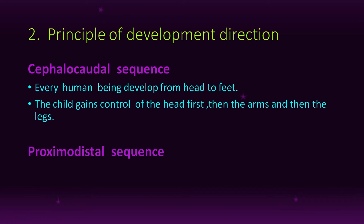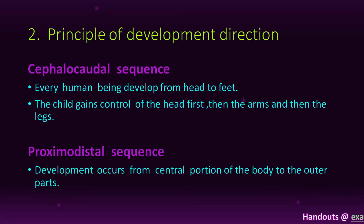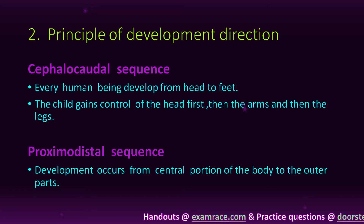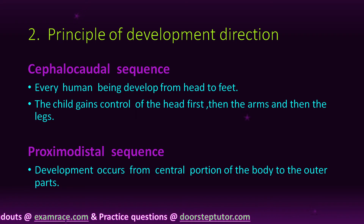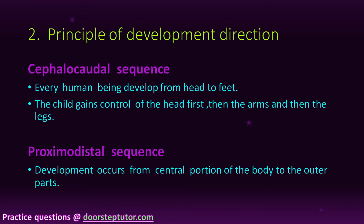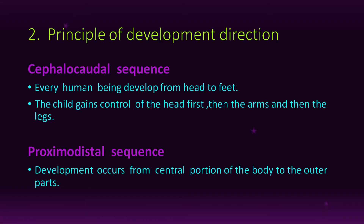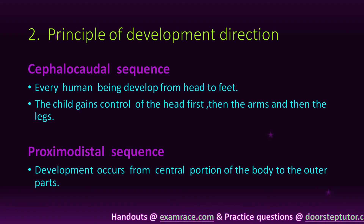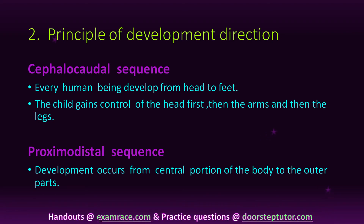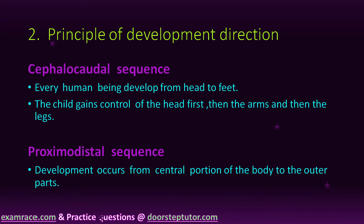The proximodistal sequence means development occurs from the central portion of the body to the outer parts. For example, looking at the hand, the elbow grows first and then the fingers — growth starts from the central portion outward. First the spinal cord develops, then the heart, then all parts of the body.